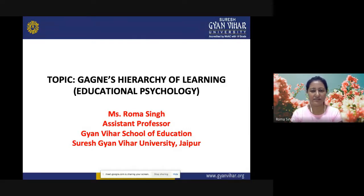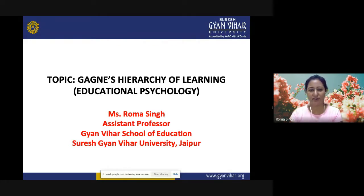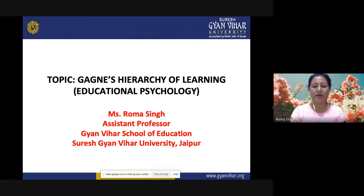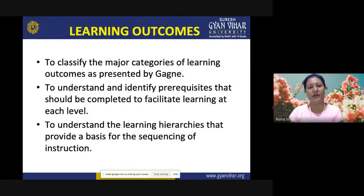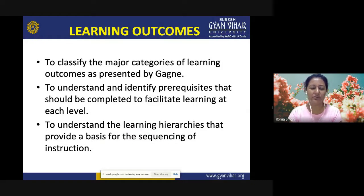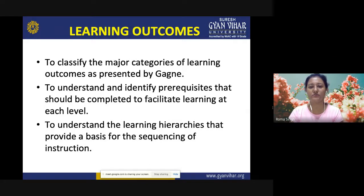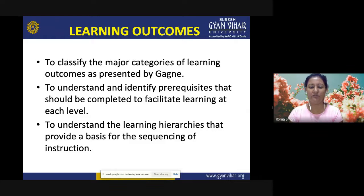Hello and welcome to the class. The topic for today's class is Gagne's hierarchy of learning, which is related to educational psychology. Robert M. Gagne basically gave an instructional model. The learning outcomes for today's class are to classify the major categories of learning outcomes as presented by Gagne, to understand and identify prerequisites that should be completed to facilitate learning at each level, and to understand the learning hierarchies that provide a basis for the sequencing of instruction.